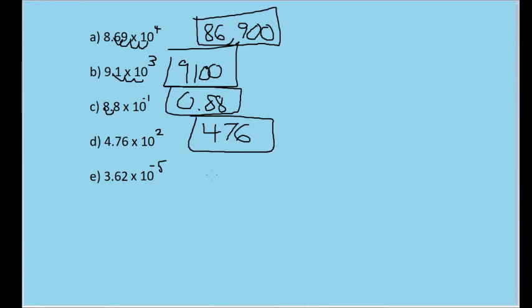In the case of 3.62 times 10 to the negative 5th power, we're making the number much smaller. So we move the decimal point five spaces to the left to make it 0.0000362.